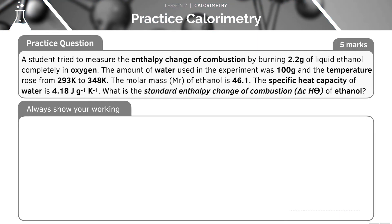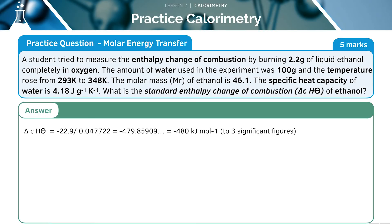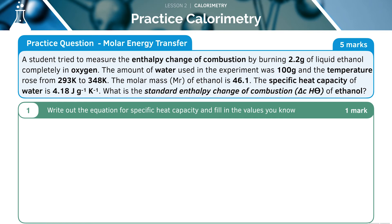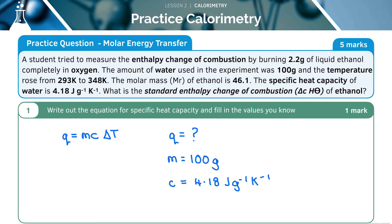Let's try another practice question — pause the video now to attempt this by yourself. First, write out the equation and find the values we know: Q = mcΔT. Q is unknown, M = 100 grams, C = 4.18 joules per gram per Kelvin, and delta T = 348 minus 293, giving us 55 Kelvin.